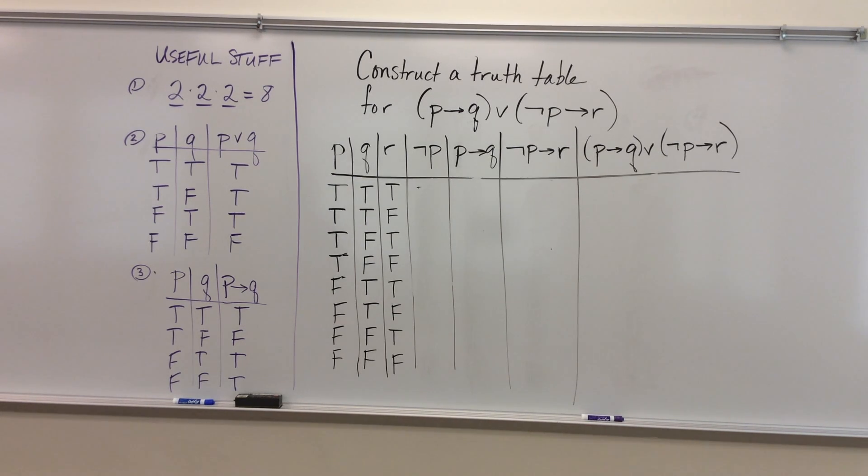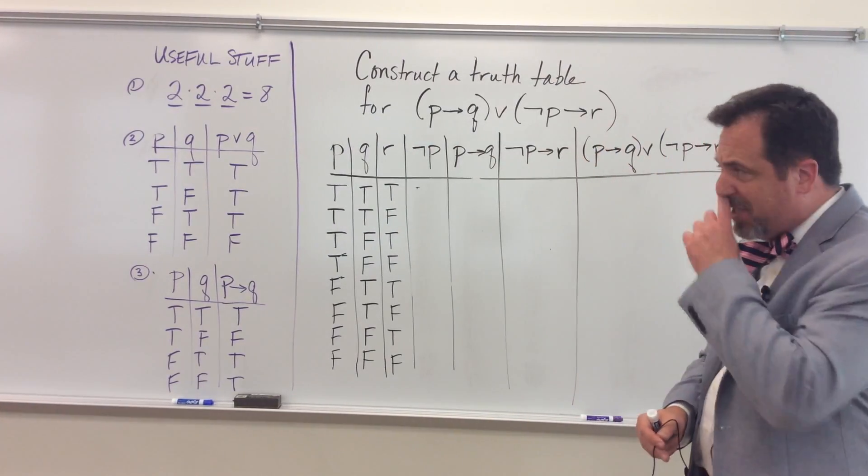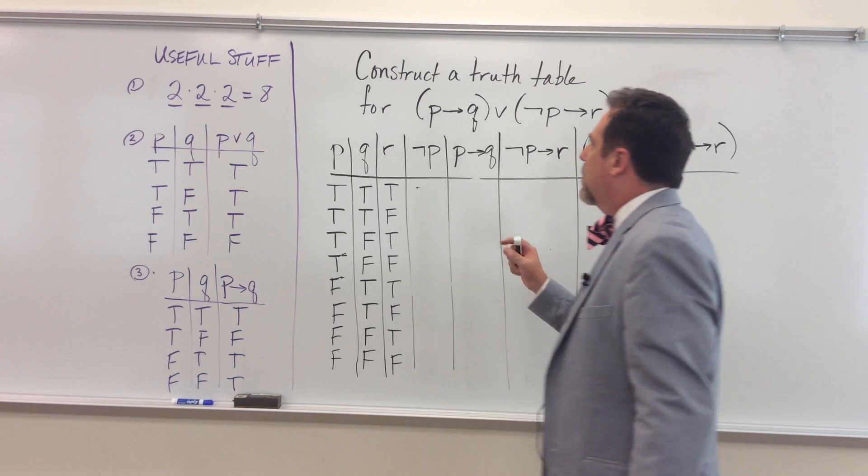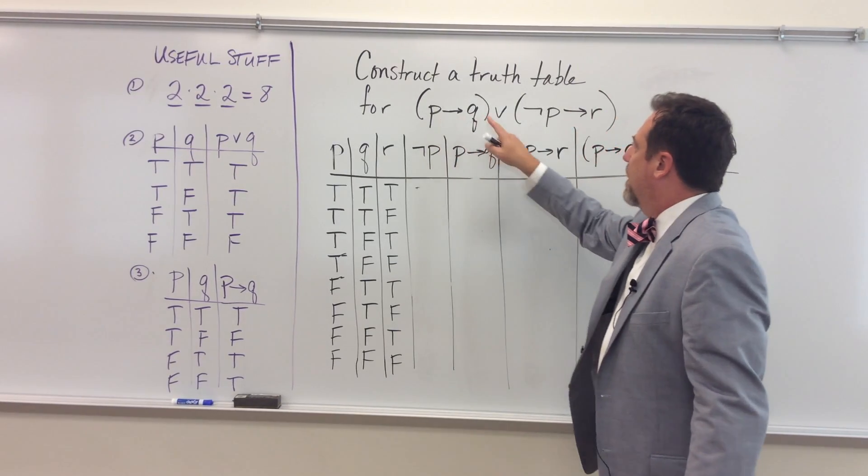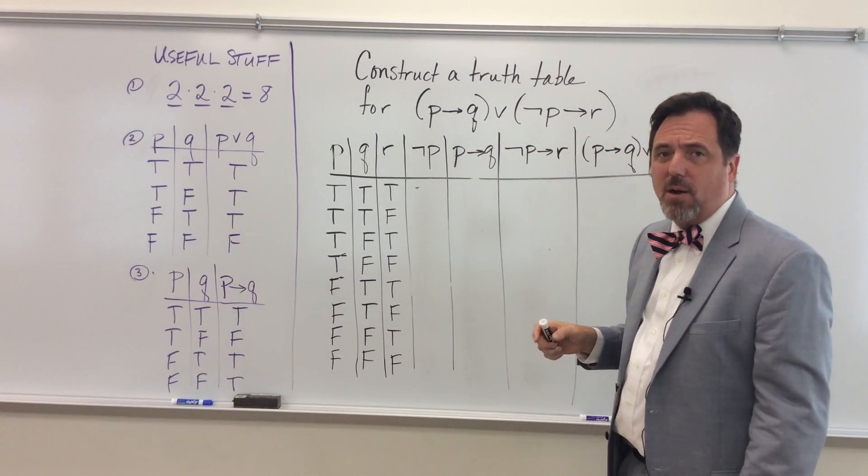All right, what we're going to do today is we're going to construct a truth table for a compound proposition with three individual propositions, P, Q, and R. So here's my proposition: if P then Q, or not P implies R.